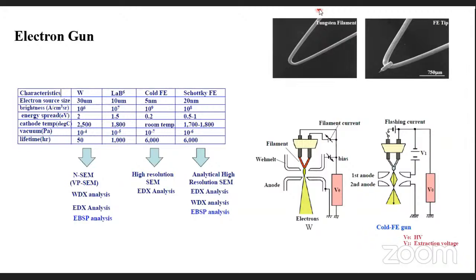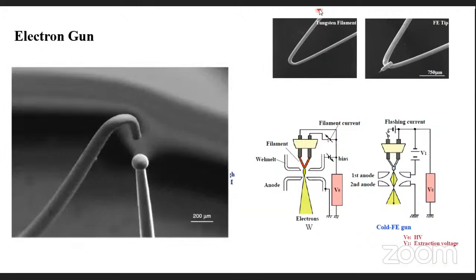Even after three or four years of use, we still get some good images, but the quality of the image will reduce. What happens to the gun is it will break and we can see separation — it loses efficiency in emitting electrons. The electron gun is very important. You can see the tungsten filament and a field emission tip with a small needle-like structure. The tungsten filament is used for thermionic emission, while the other is used for field emission.